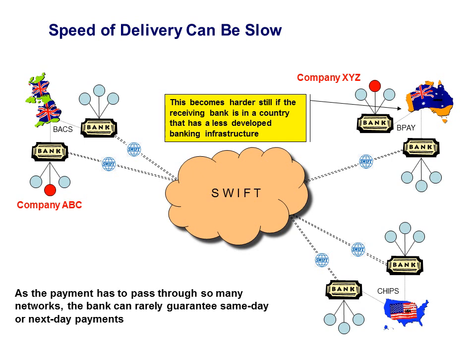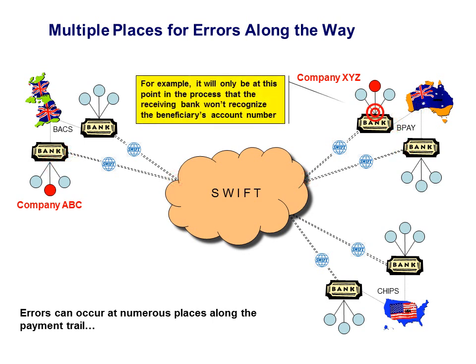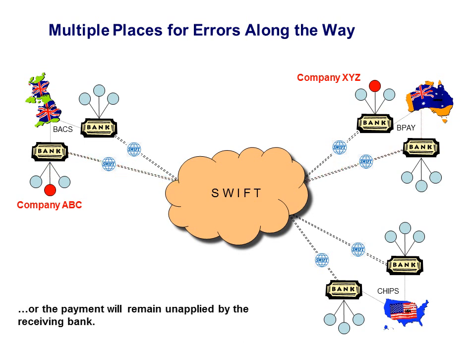The coordination becomes much more difficult if everyone's not a SWIFT member, or if the destination country has a less mature banking infrastructure. Errors can occur in multiple places. In many cases, it's not until the beneficiary complains that they haven't received the payment that even the tracing of its status begins to take place — whether the money is in the domestic settlement account, the correspondent banking account, or within the bank of the beneficiary.